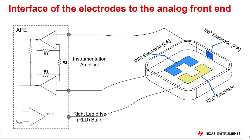The number and position of these electrodes can vary based on the mechanical design of the watch. The potential between the RA and LA electrodes is differentially gained up by the instrumentation amplifier of the analog front end. A feedback loop drives the RLD electrode through an RLD buffer. The intent of the RLD feedback loop is to drive the body with a common mode potential so as to suppress any common mode interferences picked up by the body. A common mode interferer picked up by the electrodes can translate into a differential signal and can affect the quality of the ECG signal, so the RLD electrode plays an important role in the ECG signal acquisition system.